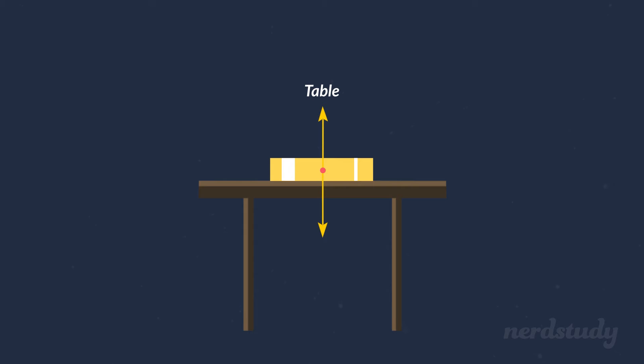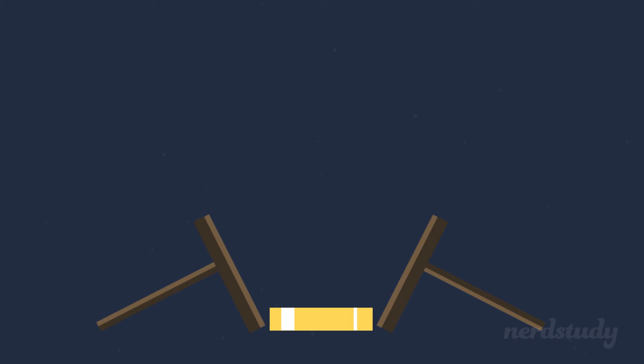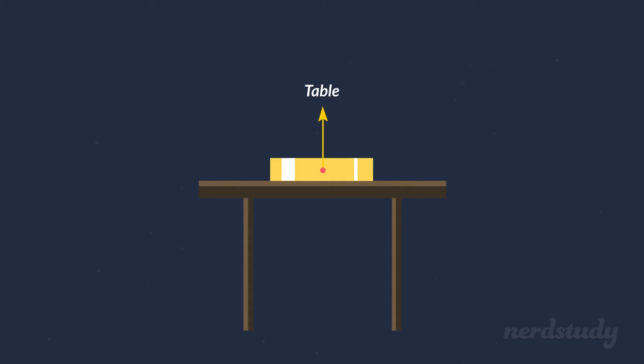Obviously, this isn't true if the book's so heavy that it will break the table, but we're going to ignore that possibility in this lesson. Awesome! Okay, so we've established that the table exerts a force on the book, and that it's not just a reaction force due to Newton's Third Law. Do we have a name for this upward force?